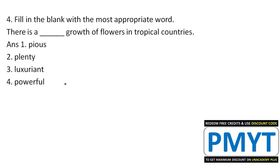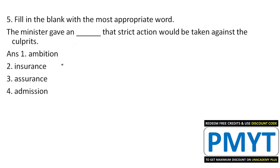Fourth question: 'There is a ___ growth of flowers in tropical countries.' 'Pious' means sacred, used in religious context. 'Plenty' means in large quantity but doesn't fit with 'growth.' 'Luxuriant' is the correct answer. Next: 'The minister gave an ___ that strict action would be taken against the culprits.' 'Ambition' is wrong, 'insurance' is wrong — 'assurance' is the correct answer.